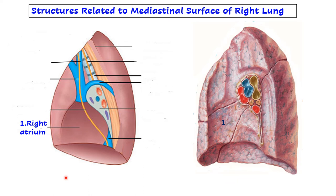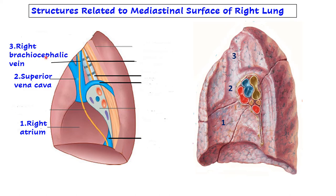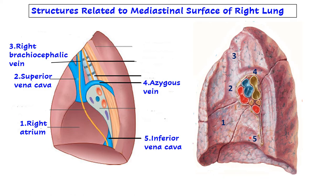Now the veins: first is the superior vena cava - this groove in front of the hilum is for the superior vena cava. After that, its tributary the right brachiocephalic vein - this impression is for the right brachiocephalic vein. Another vein in relation is the azygous vein - a tributary of the superior vena cava - drawn just above the hilum of the lung; you can see this grooved area just above the hilum is for the azygous vein. Then the inferior vena cava - you can see it opening into the right atrium, and this impression is for the inferior vena cava. So: right atrium, superior vena cava, inferior vena cava, and two tributaries of the SVC - the azygous vein, which arches over the hilum, and the right brachiocephalic vein.